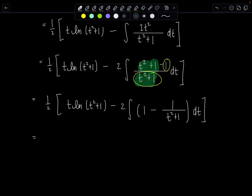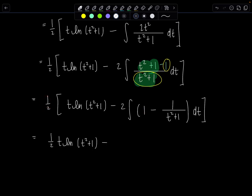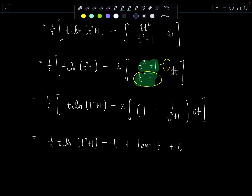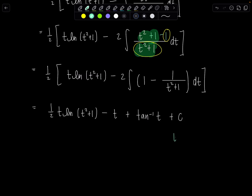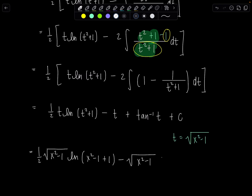Distributing the one half: we get one half t ln(t squared plus 1), minus t — because the one half and the 2 cancel — plus arctan of t, plus C. Now substituting back with t equals the square root of x squared minus 1: one half times square root of x squared minus 1 times ln of x squared minus 1 plus 1, minus square root of x squared minus 1, plus arctan of square root of x squared minus 1, plus C.